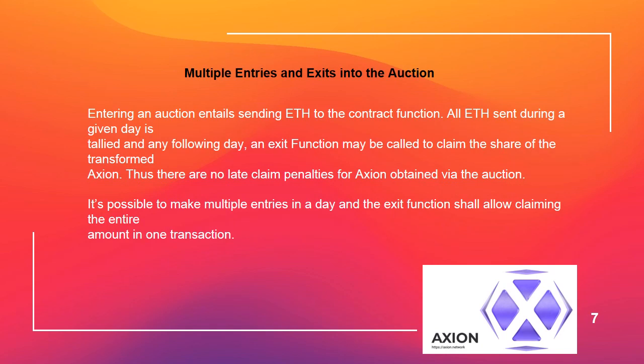Multiple entries and exits into the auction. Entering an auction entails sending ETH to the contract function. All ETH sent during a given day is tallied, and any following day an exit function may be called to claim the share of the transformed Axion. Thus there are no late claim penalties for Axion obtained via the auction. It's possible to make multiple entries in a day, and the exit function shall allow claiming the entire amount in one transaction.